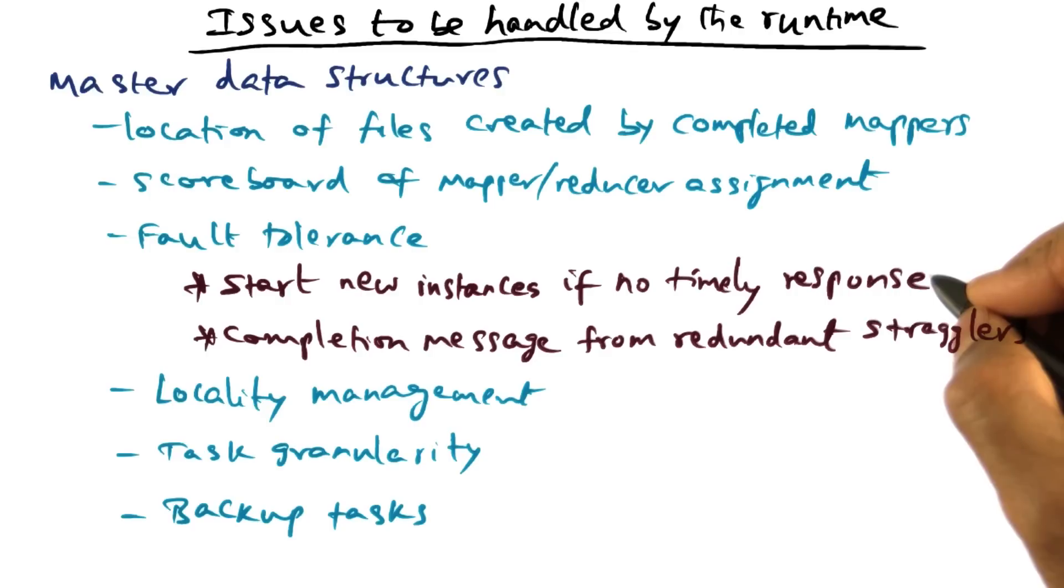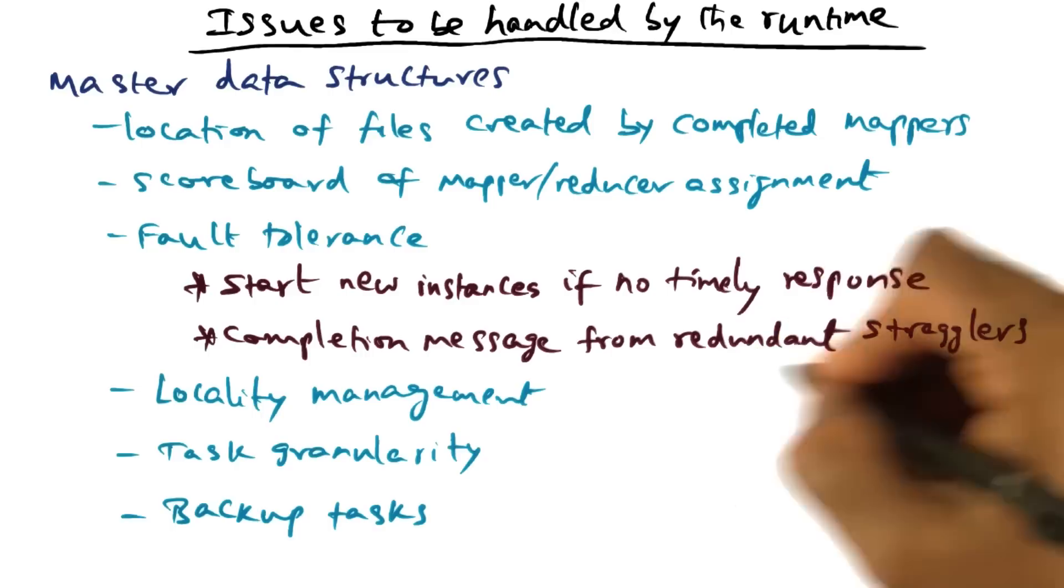And the master says, okay, I'm going to commit this as the real output file of the computation. Each reducer is writing a local file, and finally when the master gets a notification from the reducer that it has completed its work, at that point, master renames that local file as the final output file.